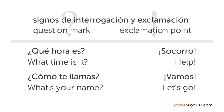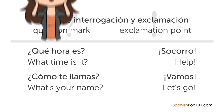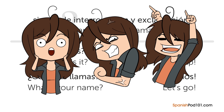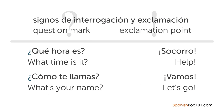The 'signos de interrogación' — the question mark — is used in interrogative sentences. The 'exclamación' — the exclamation point — is used to express surprise, anger, or any other strong emotion. Remember that in Spanish, you write an inverted question or exclamation mark at the beginning of the sentence as well. Examples: '¿Qué hora es?' meaning 'What time is it?', '¿Cómo te llamas?' meaning 'What's your name?', '¡Socorro!' meaning 'Help!', and '¡Vamos!' meaning 'Let's go!'